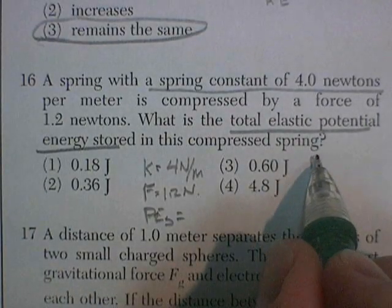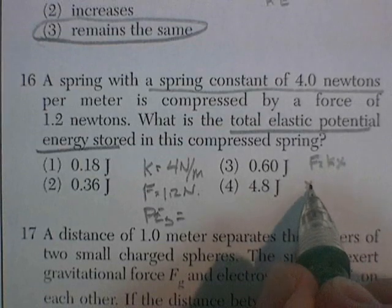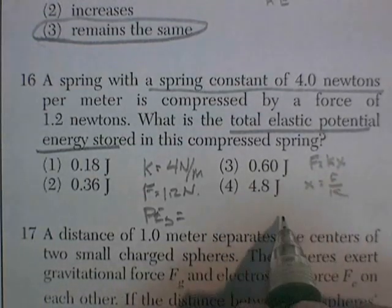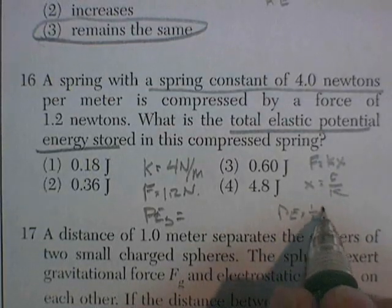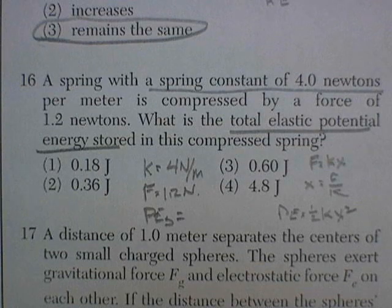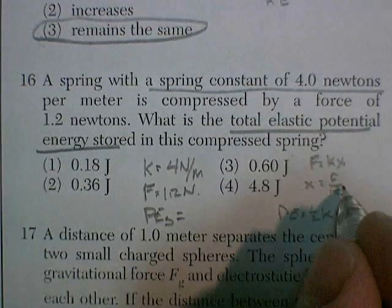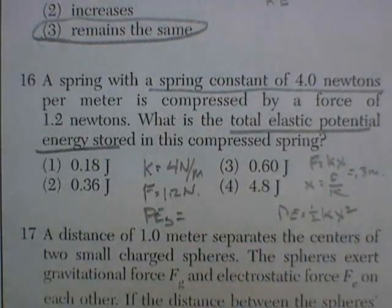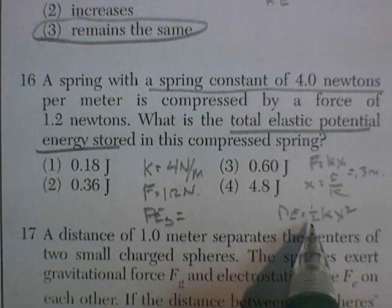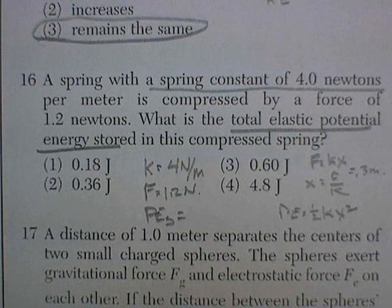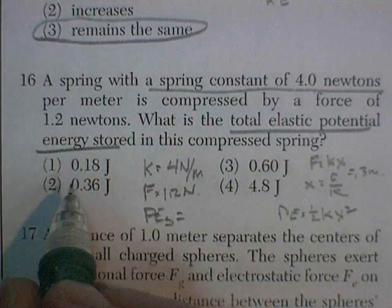All right, f equals kx, x equals f divided by k, and potential energy is equal to 1/2 kx squared. I get out my calculator. I find that x is equal to 0.3 meters. I square it. Multiply that by k again, which is 4. Then take half of that. And I'm getting 1.8 joules.